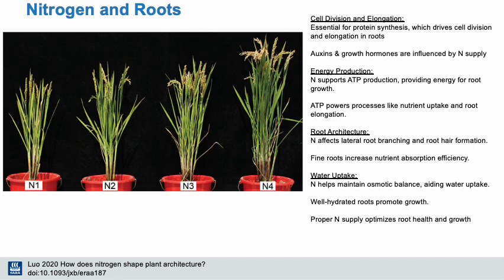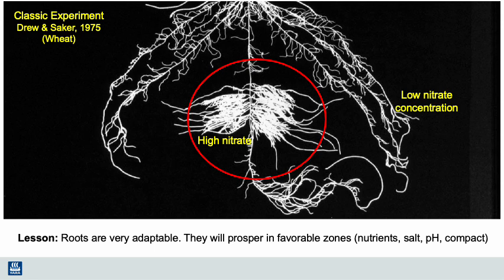I've included references in the slides where you can get more information if that would be helpful. This is a picture from a classic study published about 50 years ago. In this work, the authors grew wheat in a low nitrogen soil, but had one small zone in the soil that did receive nitrate fertilizer. Later they dug up the wheat plants and observed the root architecture. It was amazing how the root system responded to that small amount of nitrogen by growing so many roots in that little spot.